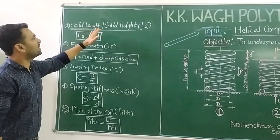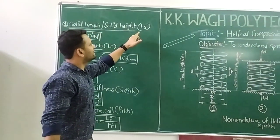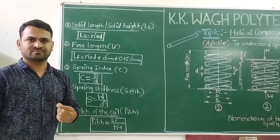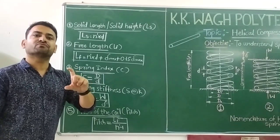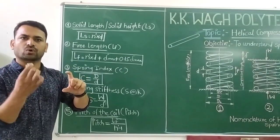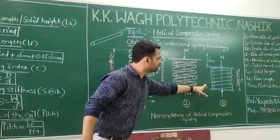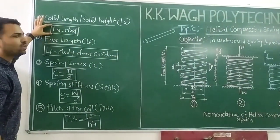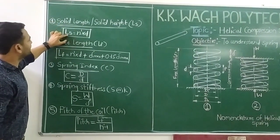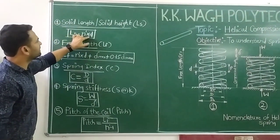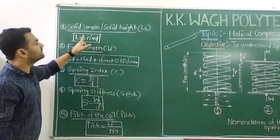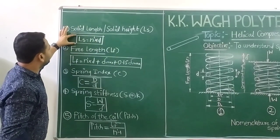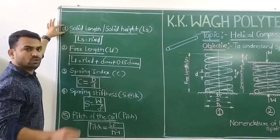Solid length, denoted by LS, is the length when the spring is fully loaded until all coils touch each other, as shown in diagram 3. The formula is: LS = n' × d, where n' is the total number of turns and d is the diameter of the wire. With this formula we can calculate the solid length.